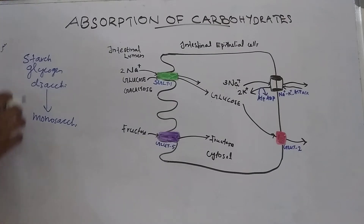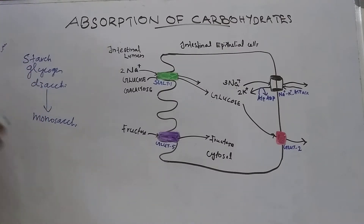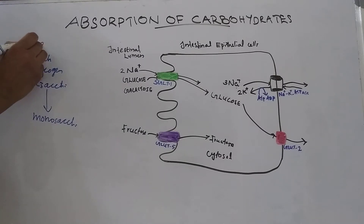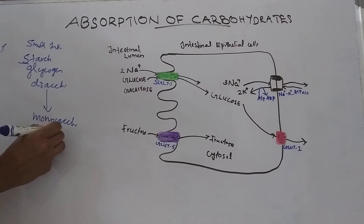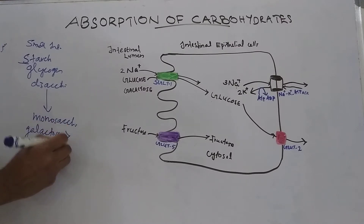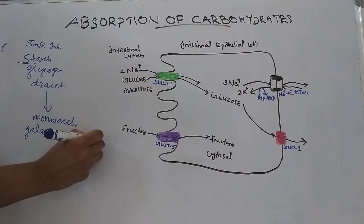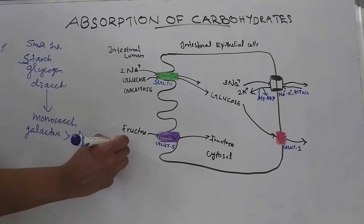After digestion, these monosaccharides are absorbed almost entirely from the small intestine. The absorption rate is maximum for galactose, moderate for glucose, and minimum for fructose.